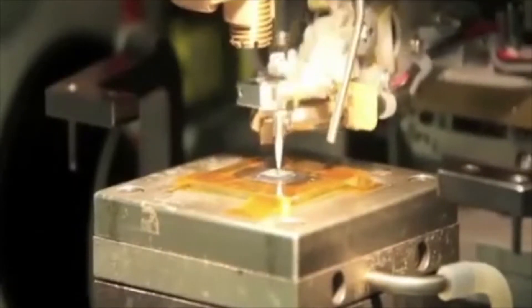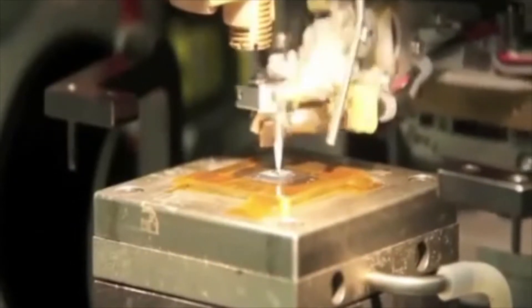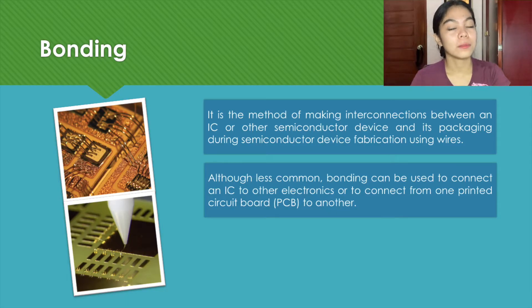Aside from this definition, bonding can also be described as attaching the die, which will be discussed later, on the ceramic substrate and then connecting the leads to the package. Although less common, bonding can be used to connect an IC to another electronic component or to connect a printed circuit board or PCB to another PCB.